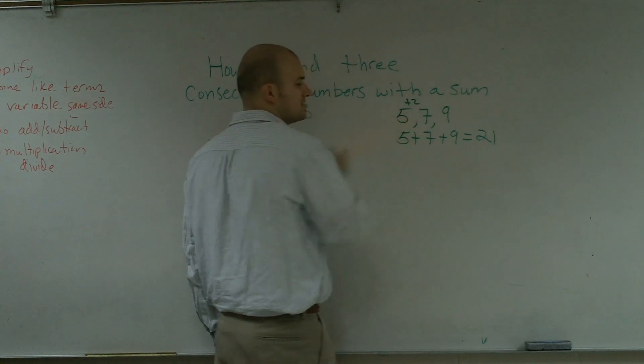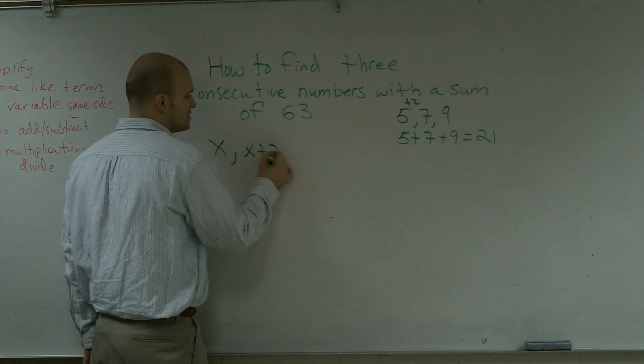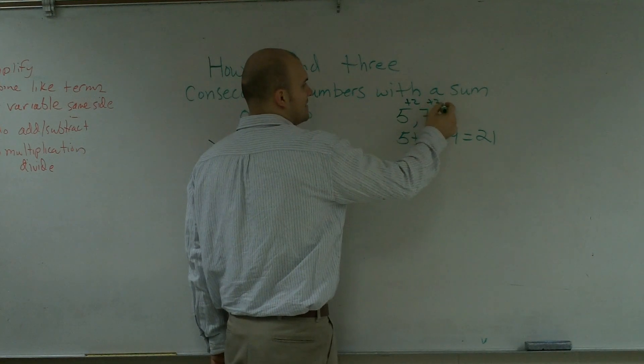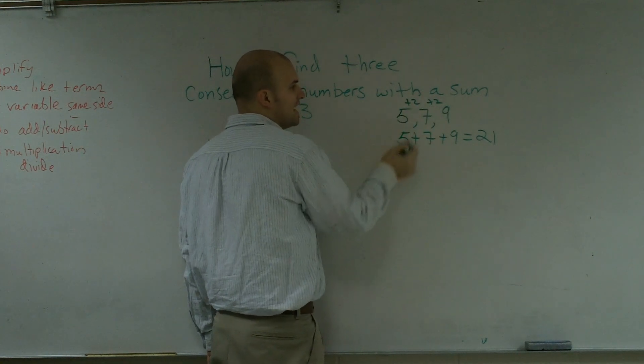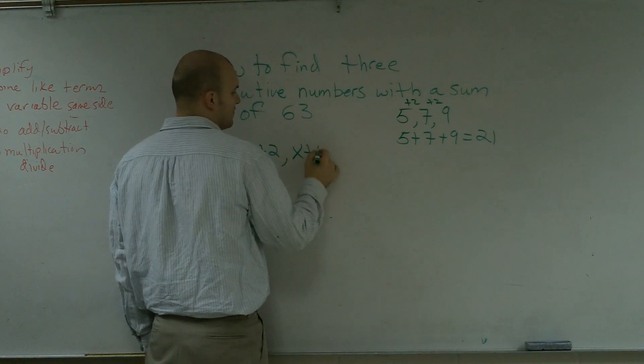So I'm actually adding 2 to get to my next number. So to represent that algebraically, I'm going to say x plus 2 would be my next number. And then the next number, I'm going to have to add 2 again. So to get from 5 to 9, I actually have to now add 4. So I'd have x plus 4.